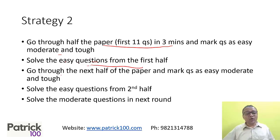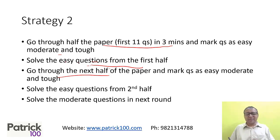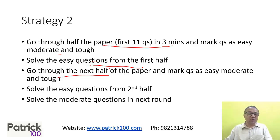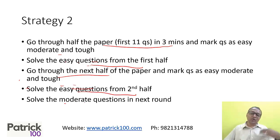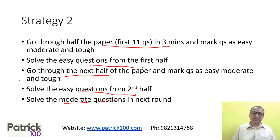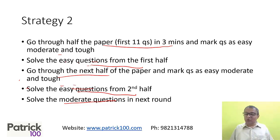Once you finish solving the easy questions in the first half, go to the next half of the paper. Again, mark them as easy, medium, and tough. When marking, you can't do it on the computer — you'll need to take a paper, make three sections, and note which question number is easy, medium, or tough. Then solve the easy questions from the second half. Once you finish that, go to the moderate questions. This approach tries to overcome the stress problem from strategy one, where spending the first six minutes just deciding difficulty levels causes anxiety.